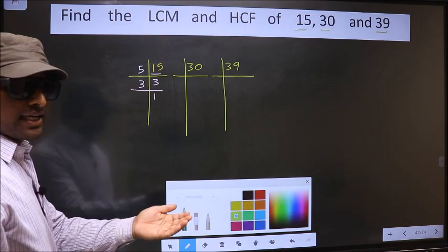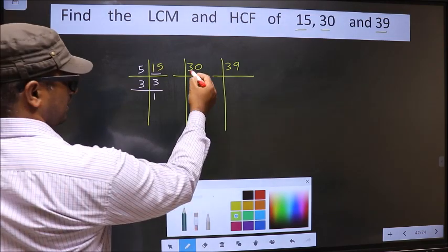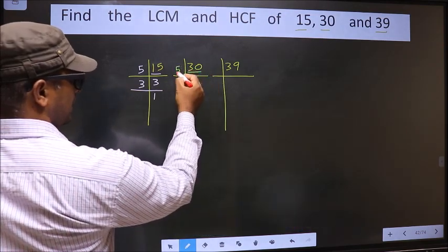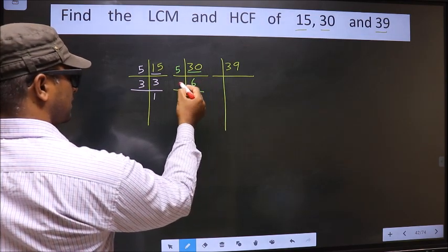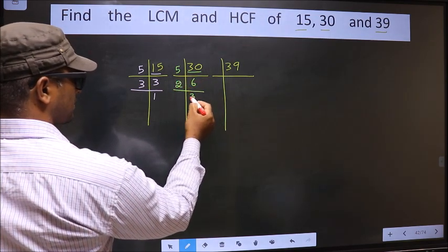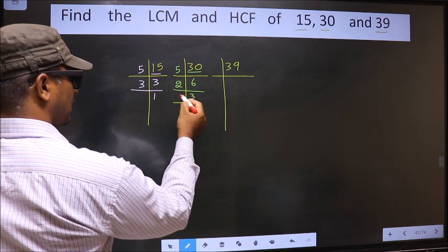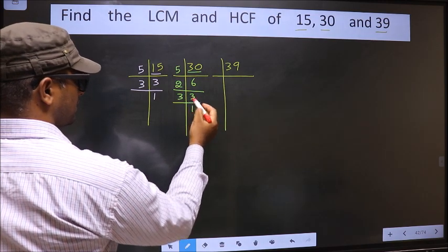Now the other number, 30. 30 is 5×6 = 30. Now we have 6. 6 is 2×3 = 6. Now we have 3. 3 is a prime number, so 3×1 = 3.